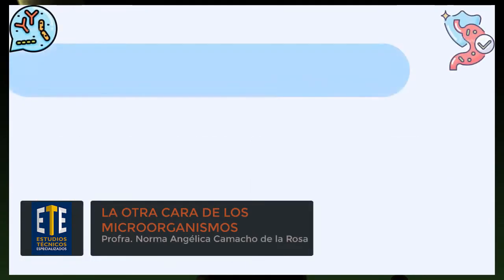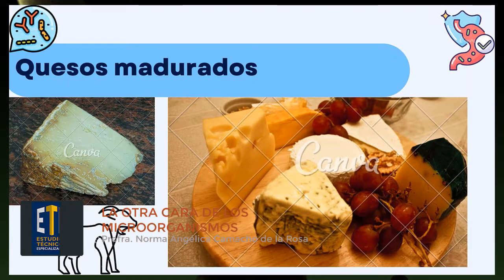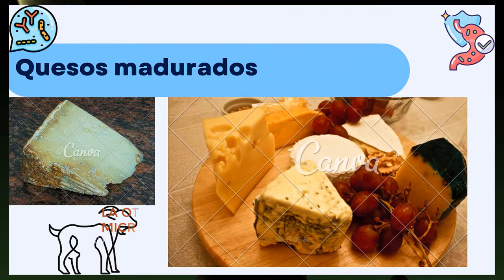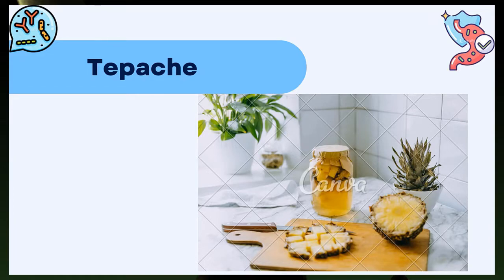En los quesos madurados, los probióticos son responsables de las características finales del producto. El kefir, también llamado búlgaros en México, procede de Turquía y Rusia; consiste en leche fermentada con levaduras y bacterias, muy parecido al yogurt, aunque su elaboración es más simple. El tepache es una bebida obtenida por fermentación láctica, elaborada con piña, guayaba, manzana, tuna o naranja, piloncillo y canela, que se deja fermentar por varios días; dependiendo de lo azucarado de la mezcla, es la intensidad de su acidez y sabor.